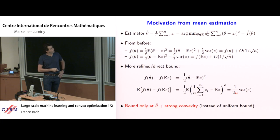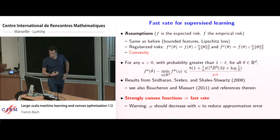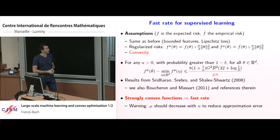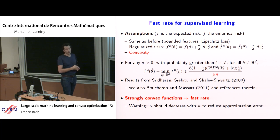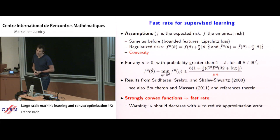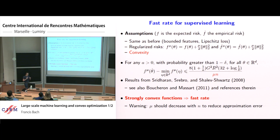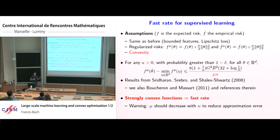The main message of yesterday: if I can optimize f-hat correctly, I will get to f with a deviation of 1/√n. Also, if you add a regularizer with parameter μ, the deviation improves from 1/√n to 1/(nμ). But be careful: since μ is a regularizer, as you get more observations μ should go to zero with n, so sometimes 1/(nμ) is bigger than 1/√n.